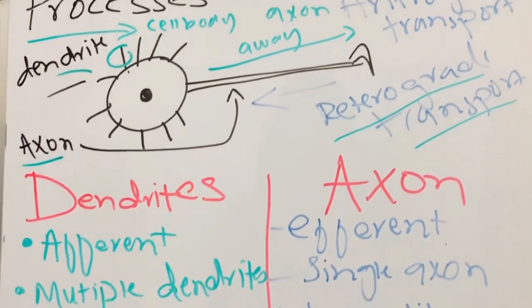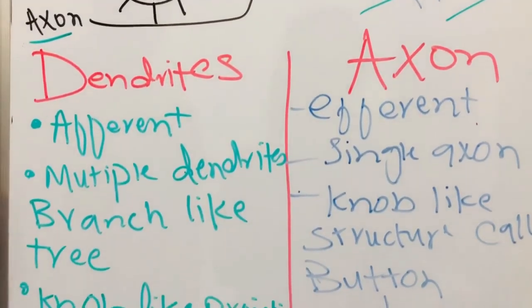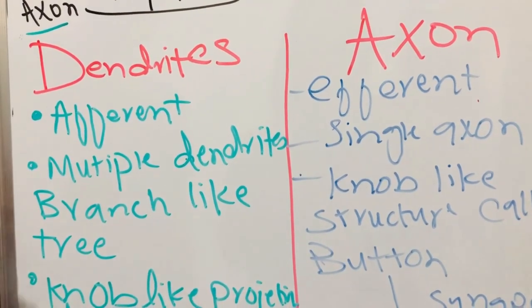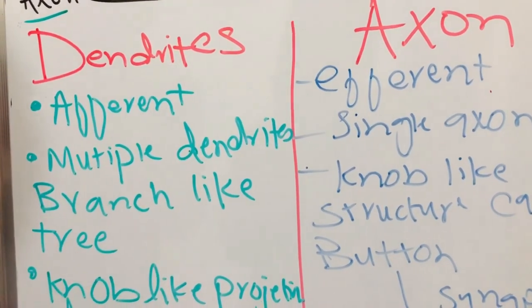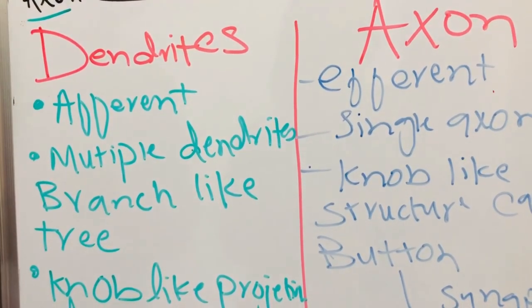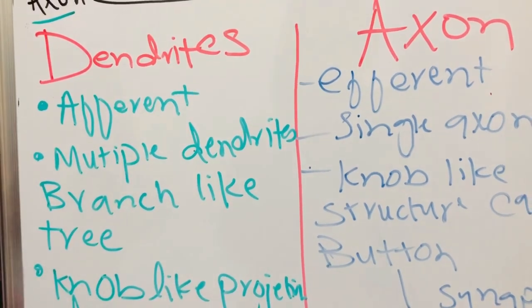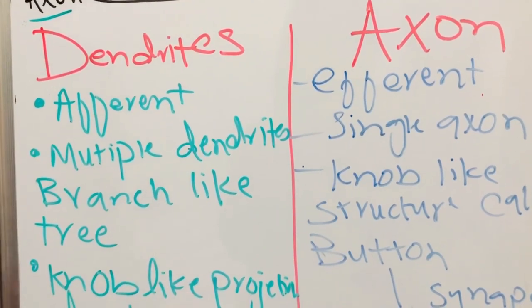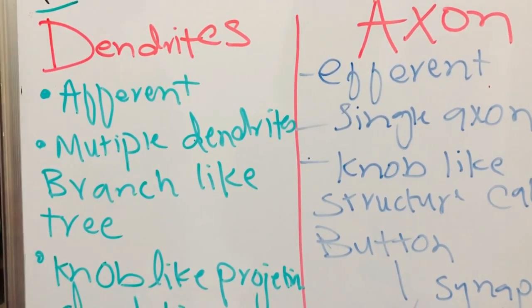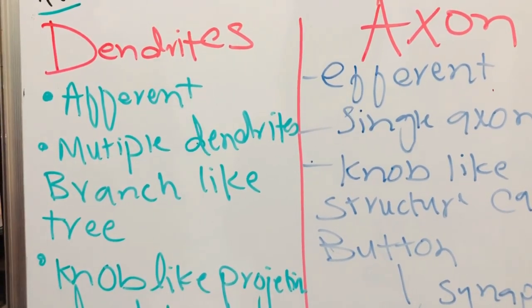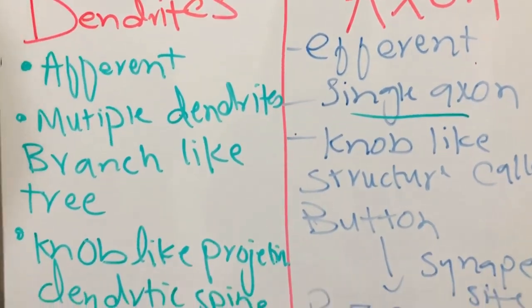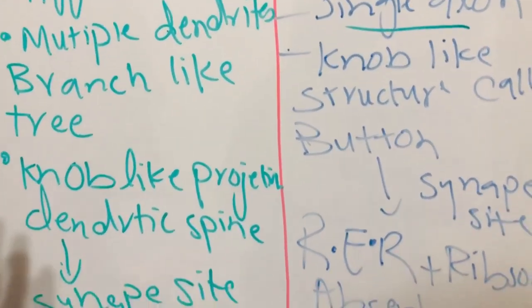Now we will see the differentiation between these two processes. Dendrites are afferent, meaning they bring information towards the cell body, while the axons carry information away from the cell body. The dendrites are multiple, branch-like tree, while our axons are single and there is no branch projection.